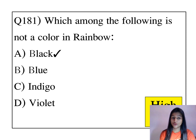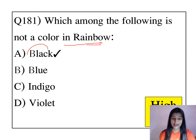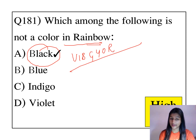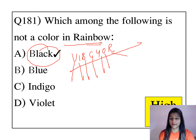Which among the following is not a color of the rainbow? Black is not the color of the rainbow. As you know, we can remember the colors of the rainbow — they are blue, green, yellow, orange, and red.